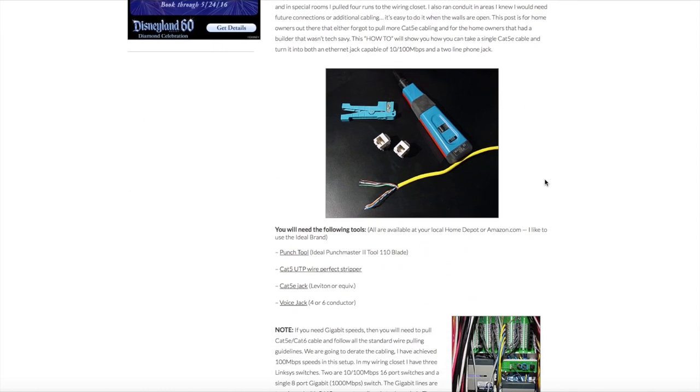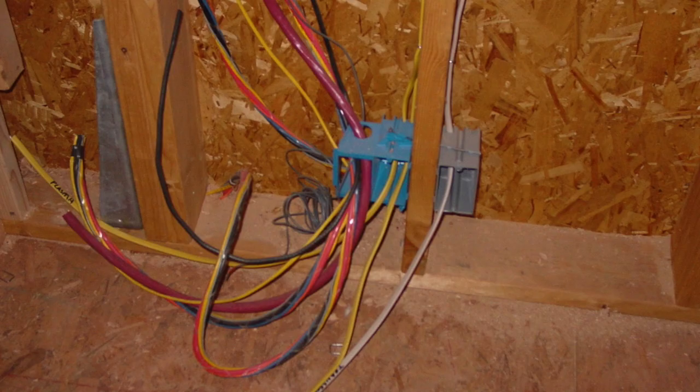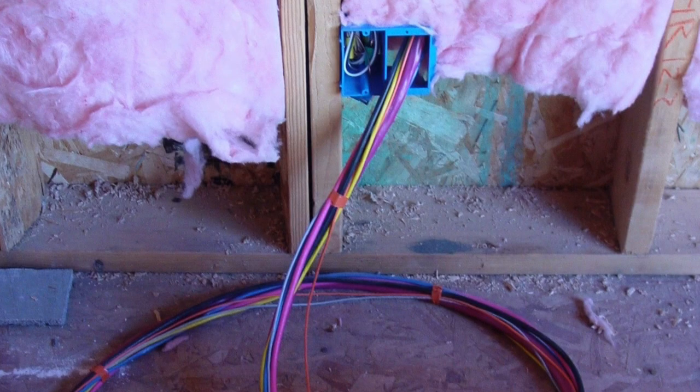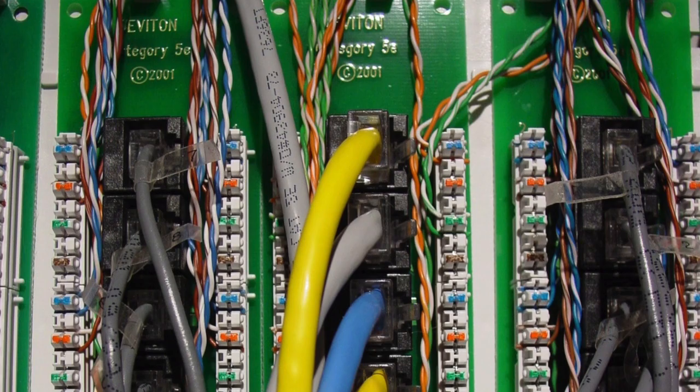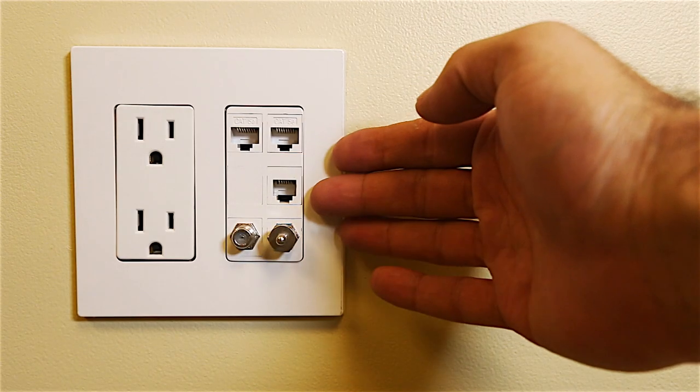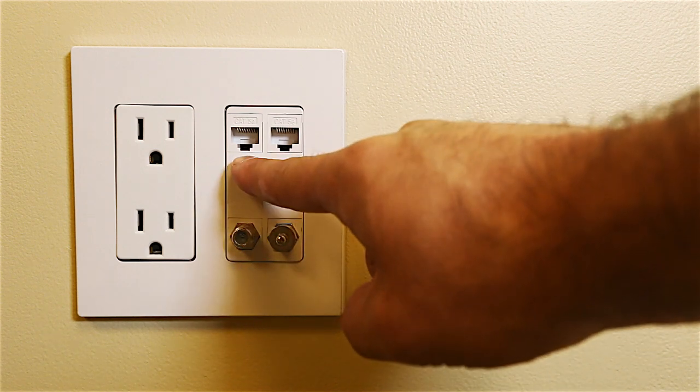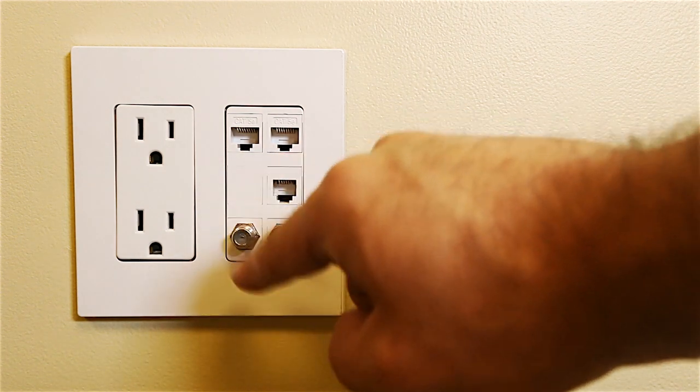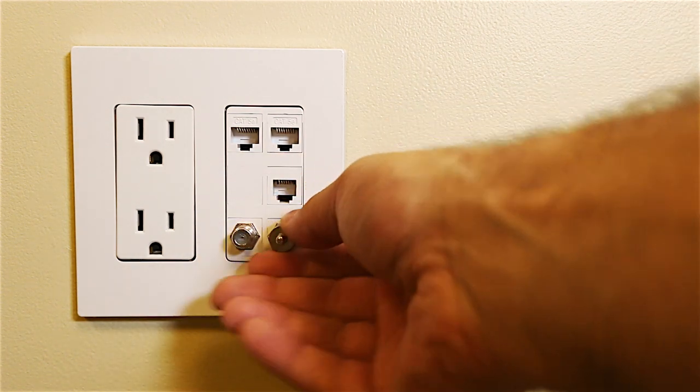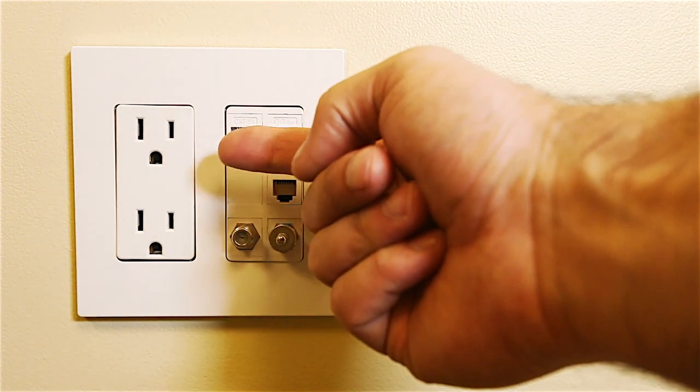What made me create this post was when I was building my house, I had the foresight to put in enough wiring at every location. This is actually in our laundry room, and you can see here I've got two Cat 5e and a phone jack, and then two RG6.